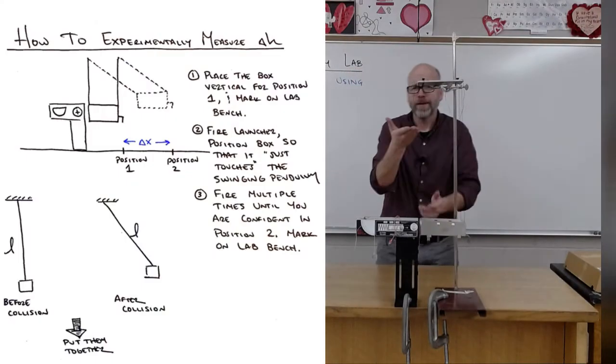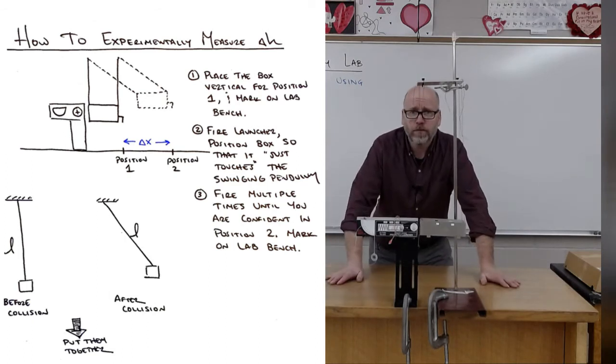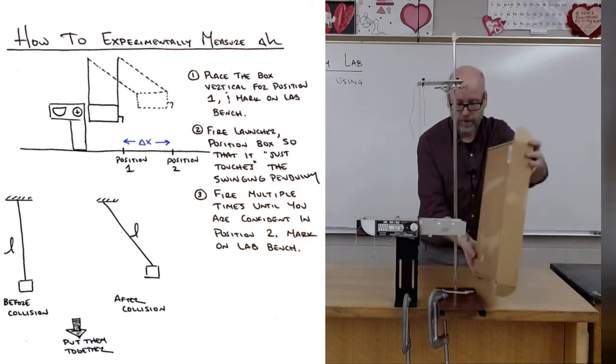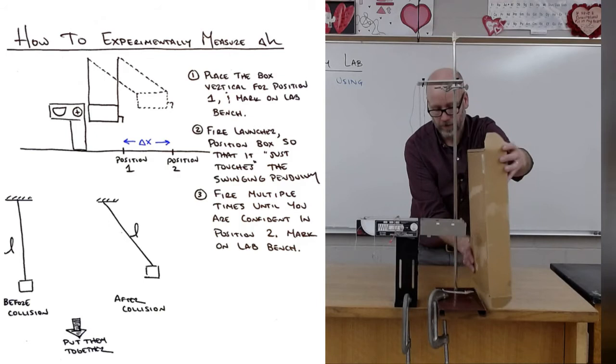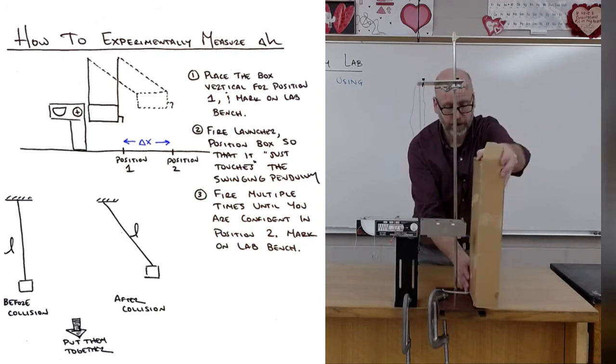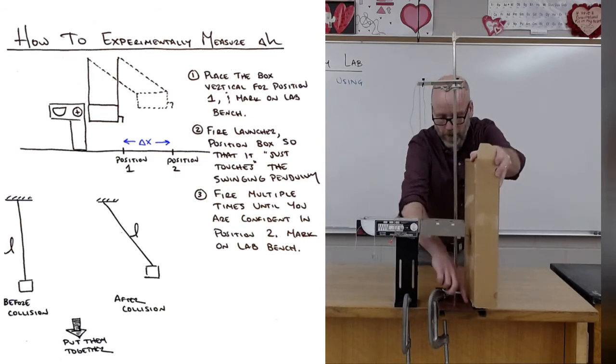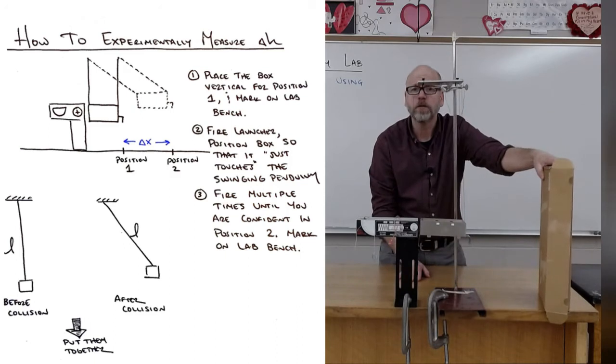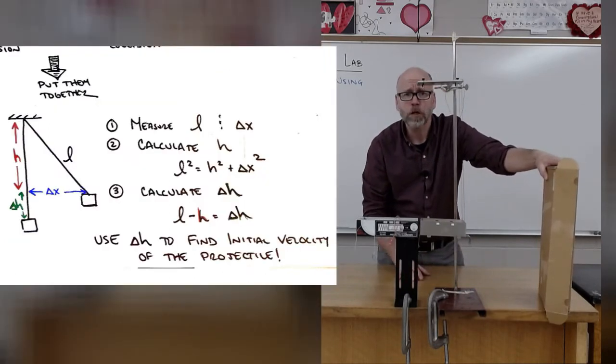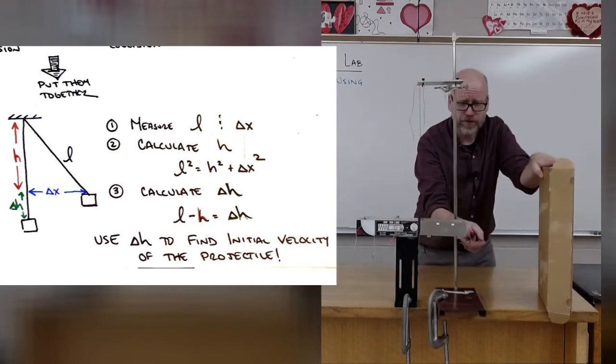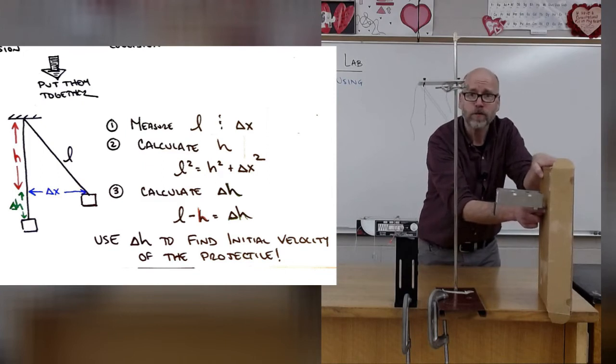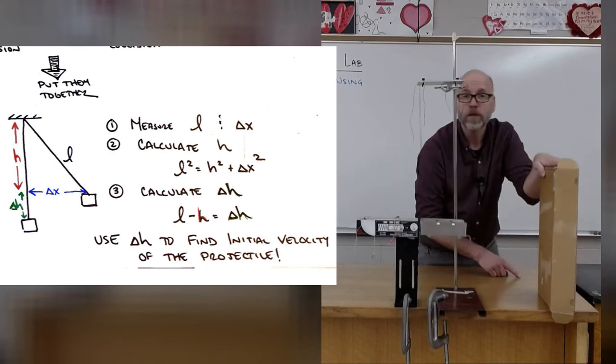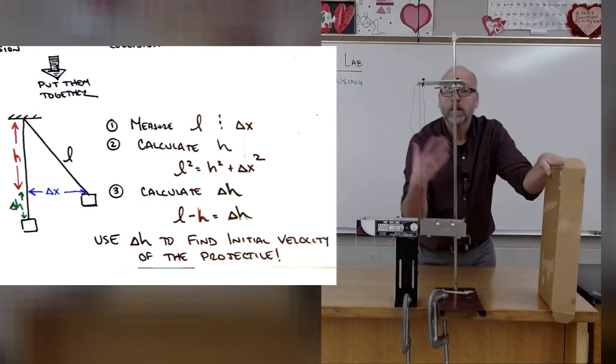Now the thing is, measuring that change in height is going to be difficult, so what we're going to do is measure its horizontal displacement. I'm actually going to use the box that the setup came in. I'm going to first mark the zero point straight down from where it's hanging, and I'm going to take my pencil right here and draw a line. That's my zero point. I'm going to put the box over here and I'm going to launch it off three, four, seven, eight times, I'm not sure yet, until I get that pendulum to just kiss that box. When it just kisses that box, I now know that that is the displacement in the x direction. I can measure that distance x, I know L, I can calculate the change in H.